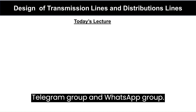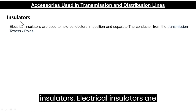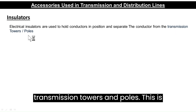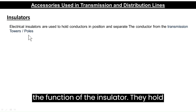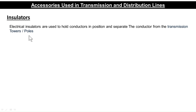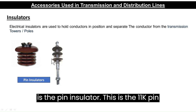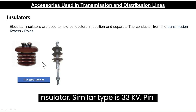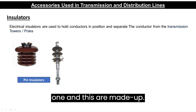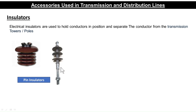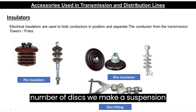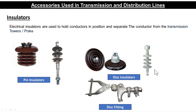First of all, we will look at insulators. Electrical insulators are used to hold conductors in position and separate the conductor from the transmission towers and poles. This is an 11 kV pin insulator, and a 33 kV pin insulator is of a similar type — this one is made of porcelain material and this one is made of polymer material. This is a disc insulator, and by combining a number of discs we make a suspension insulator.